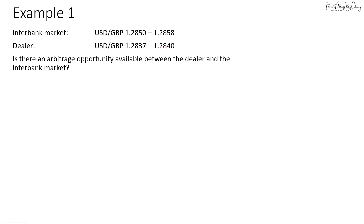What I normally teach students is that you just draw the line — draw the line with the currency pairs for both the interbank market and the dealer, and see if there's an overlap. If there's no overlap, there will be an arbitrage opportunity available.